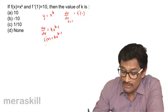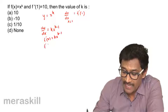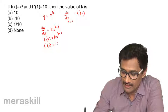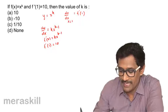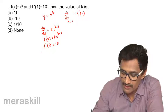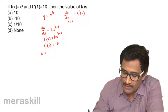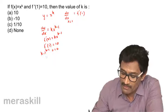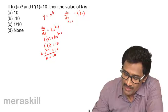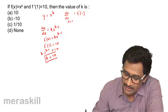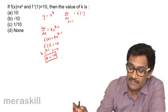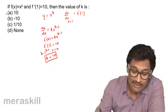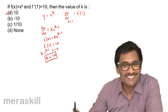It is told that f dash 1 equals n, so this means k into 1 raised to k minus 1 equals 10. Now, 1 raised to k minus 1 will be 1, so obviously k's value is going to be 10. Among these options, our answer is 10.